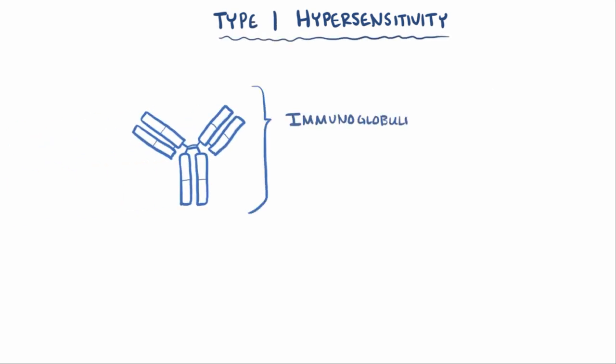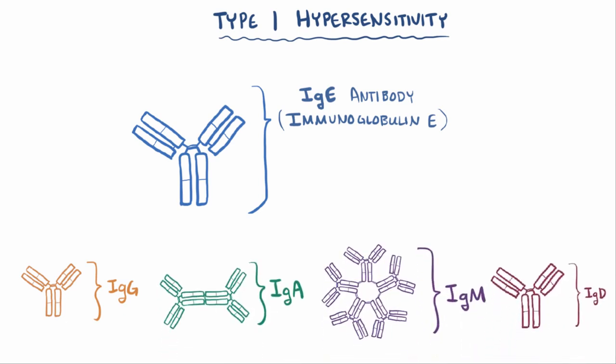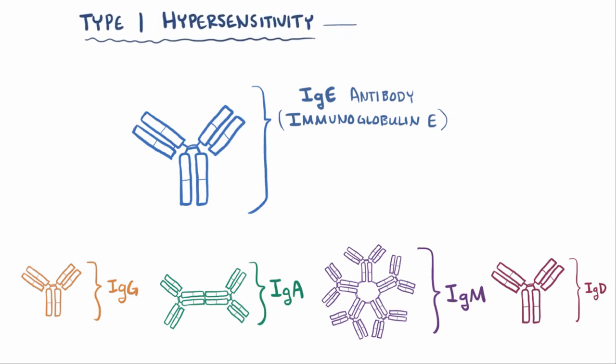The reactions rely on immunoglobulin E or IgE antibody, which is a specific type of antibody, the other major ones being IgG, IgA, IgM, and IgD. Because IgE is involved with type 1 hypersensitivity reactions, they're also called IgE-mediated hypersensitivities. This type of reaction is also sometimes called immediate hypersensitivity, because the reactions happen super fast, on the order of minutes.